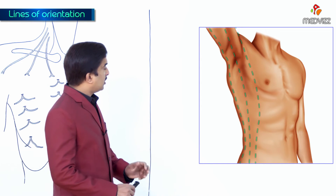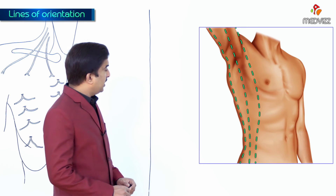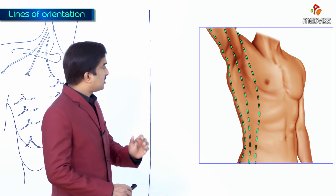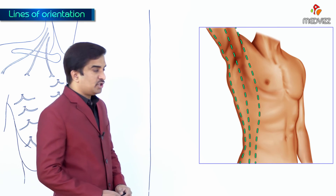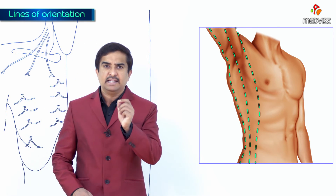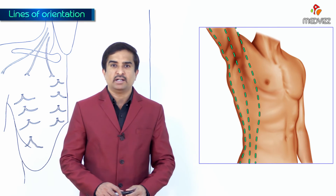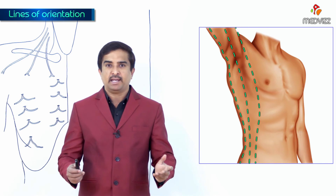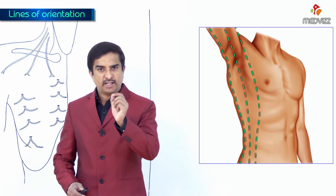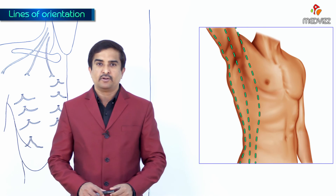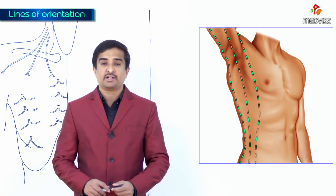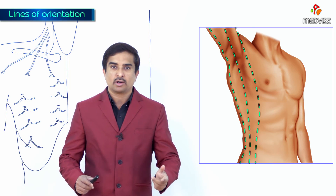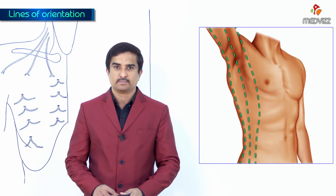So all these are considered to be the lines of orientation, and these lines of orientation are used to describe the surface features of the anterior chest wall or the thorax.